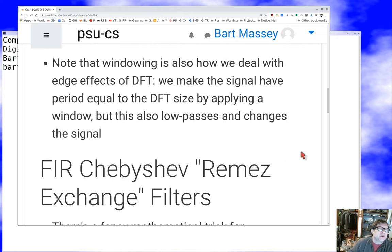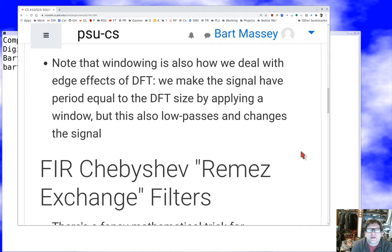We've already seen this because we noticed that since DFTs treat the signal as circular, we need to normally round off the edges of a DFT anyway. So we have to apply some kind of windowing function. These are the same windowing functions. We force the period to be the period of the DFT by applying a window to the signal. But this is also a low-pass filter, and low-pass filters change the signal. So we're really going to be filtering whether we want to or not, removing high frequencies.